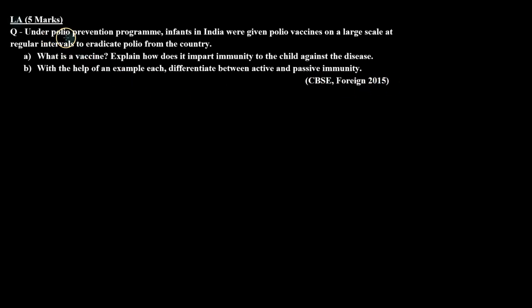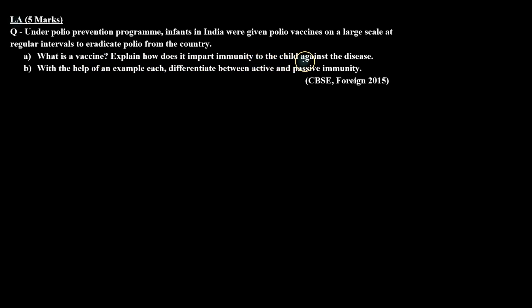The question is: under the polio prevention program, infants in India were given polio vaccines on a large scale at regular intervals to eradicate polio from the country. Part A: What is a vaccine? Explain how does it impart immunity to the child against the disease. Part B: With the help of an example each, differentiate between active and passive immunity.